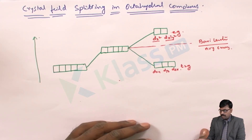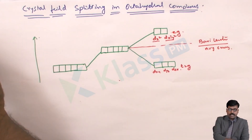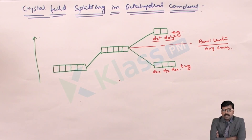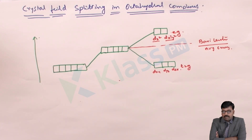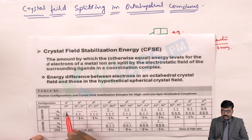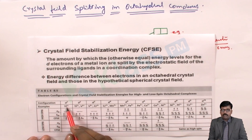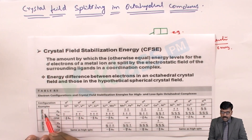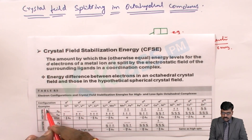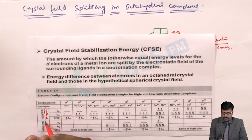Now we will see how the splitting is done with respect to the spectrochemical series — that is, how weak field ligands and strong field ligands split the d orbitals. For d1, the example is Ti³⁺. High spin corresponds to weak field ligands and low spin corresponds to strong field ligands.